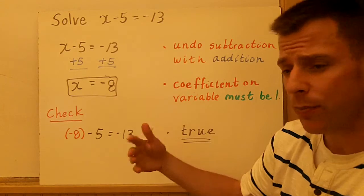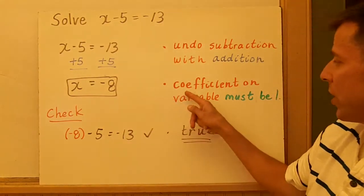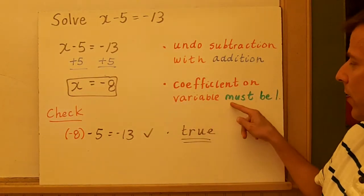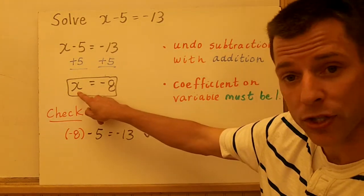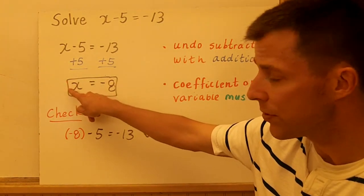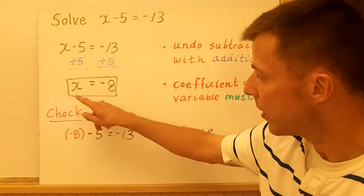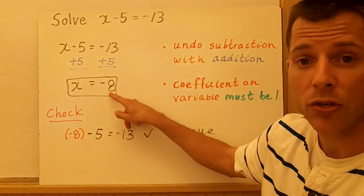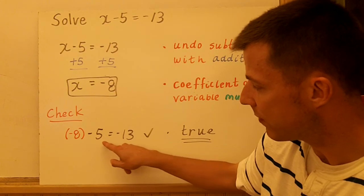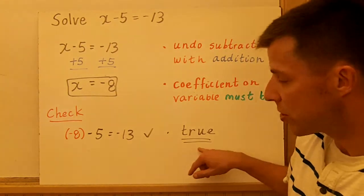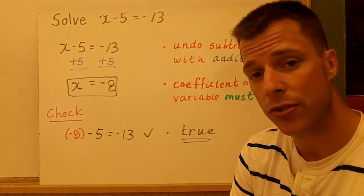It's important to remember now that the variable is by itself, and the coefficient in front of that variable is 1. So the coefficient is the number in front of the variable. You don't see it there. It is 1. So we have x equals negative 8. You can check your answer. Does negative 8 minus 5 equal negative 13? That's a true statement, so you know your answer is correct.